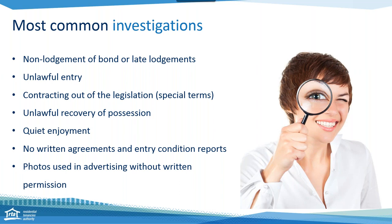We also look at unlawful entries and contracting out of the Act. An example involved a large agency with several counts of unlawful entry and one count of contracting out of the Act — specifically requiring professional carpet cleaning. A conviction was recorded due to serious and aggravating circumstances relating to repetitive unlawful entries. That company was fined $10,000.